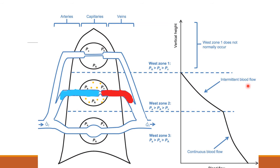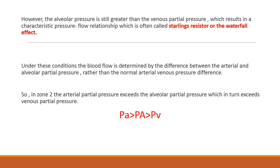There is a characteristic pressure-flow relationship in this zone, because the alveolar pressure is still higher than the venous partial pressure. The flow depends upon the difference between the artery and the alveolus — this characteristic relationship is called the Starling resistor or the waterfall resistor. To summarize Zone 2: blood flow is determined by the difference between arterial and alveolar pressures, rather than the normal arterial-venous pressure. The arterial partial pressure exceeds the alveolar partial pressure, which in turn exceeds the venous partial pressure.